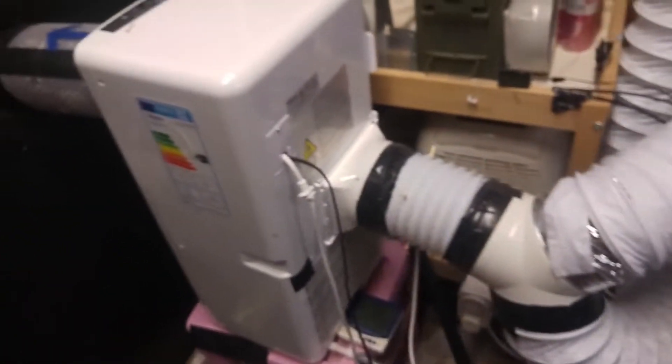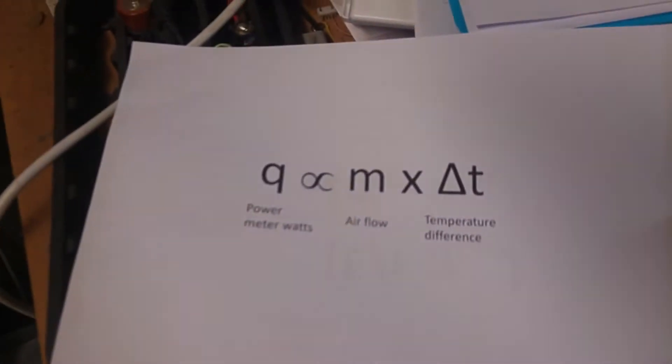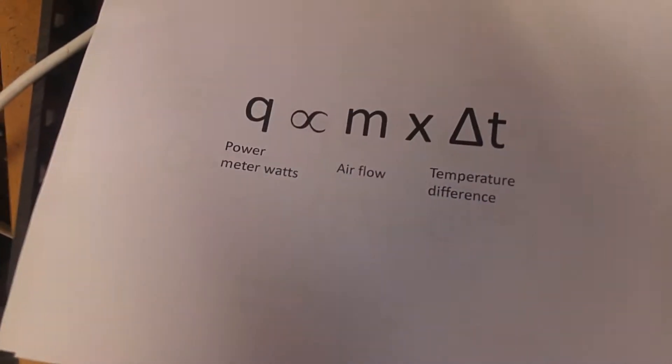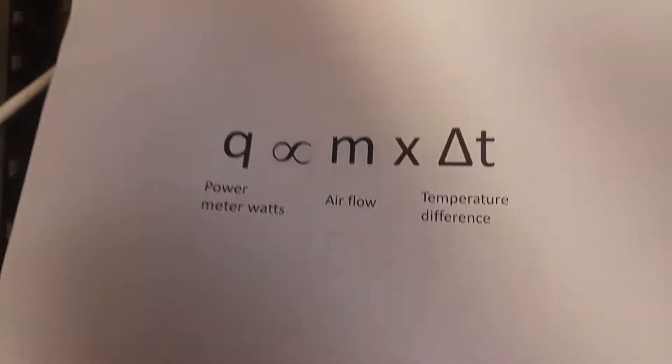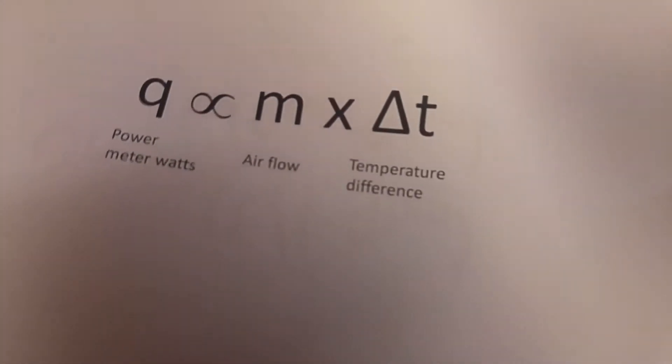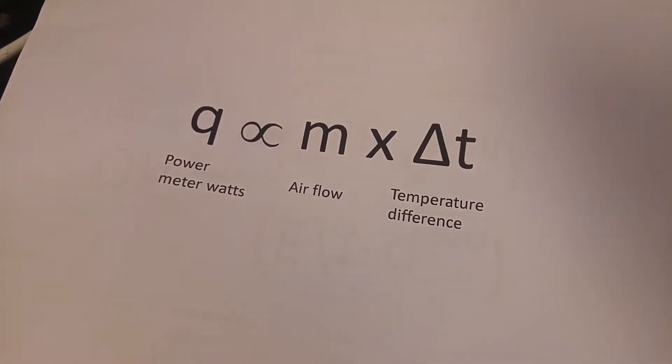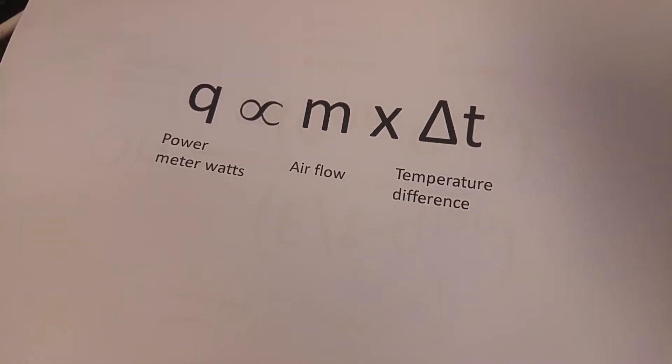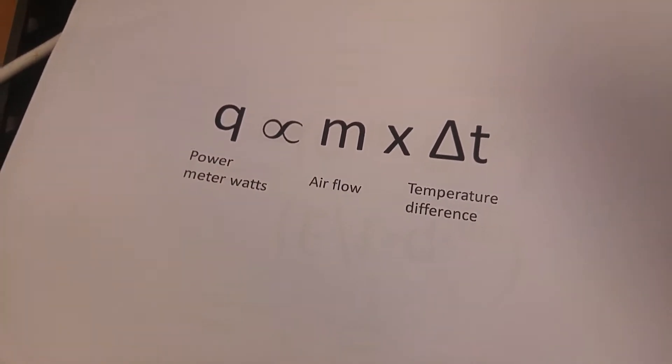Okay. So then you just run the equation backwards to find M, the air flow. Q is the power meter reading, which is from there. And delta T is the difference between the two thermometers. You have to wait five minutes for the reading to get steady state. So let's do that now.